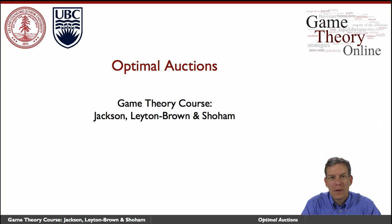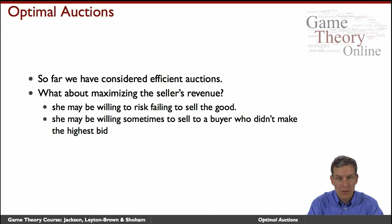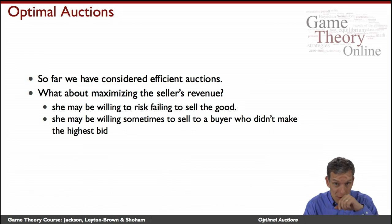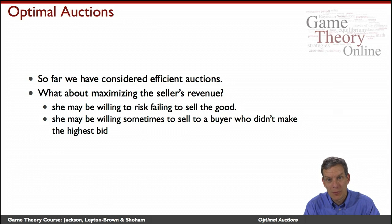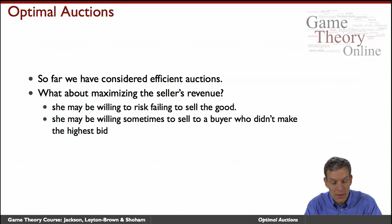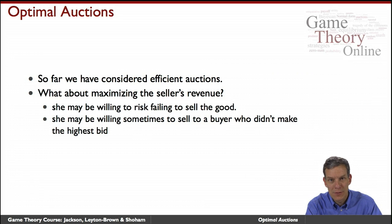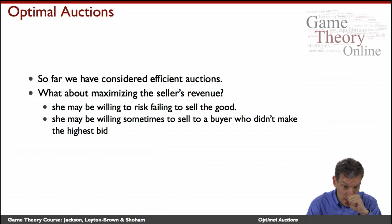Hi folks. Let's talk about optimal auctions and what we mean by optimal auctions. Up to this point in the course, when we've been analyzing auctions, we've taken auctions as given and analyzed them, or talked about optimal efficient auctions in terms of Vickrey-Clark-Groves mechanisms. Here the idea is that we'll think about a seller designing an auction, where the seller has incentives not necessarily to do the efficient thing, but instead to maximize the expected price — the expected revenue.